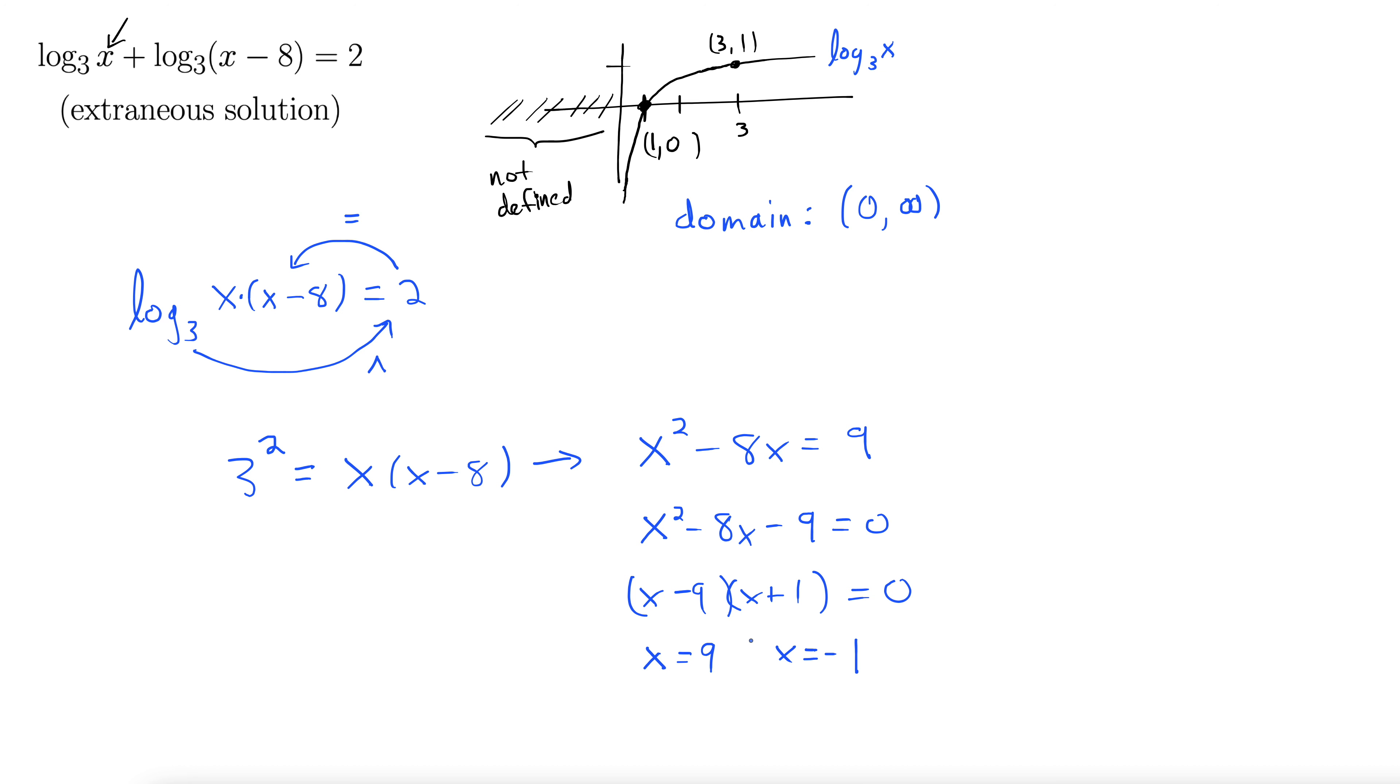So going back to our solutions that we found here, this is x equals negative 1. If we tried to put that into this log right here, it would give us a negative inside the log. And same thing here, clearly if we put it in here, it's negative 1 minus 8, it'd be really negative. So we definitely have to toss out negative 1 for a solution here that is extraneous.